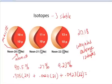I end up with a value of 20.18 atomic mass units for this particular element, neon.